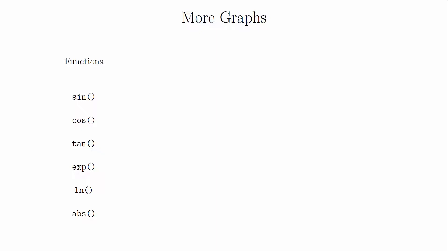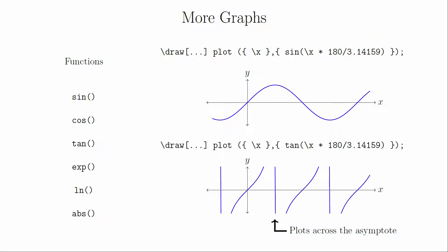It's worth noting that when we're inside of the plot command, we also have access to the sine, cosine, and tangent functions, as well as the exponential function, the natural logarithm function, and the absolute value function. The trigonometric functions are functions of degrees, so you will probably want to include a factor to convert your angle from radians to degrees. Also, because the tangent function has vertical asymptotes, you may want to graph each branch separately.